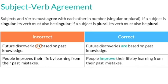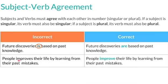Here's another example. Incorrect: 'People improves their life by learning from their past mistakes.' Notice that the word 'people' is plural, whereas the verb 'improves' is singular. To correct this sentence, you write: 'People improve their life by learning from their past mistakes.' 'People' is plural, therefore the verb 'improve' also has to be plural.